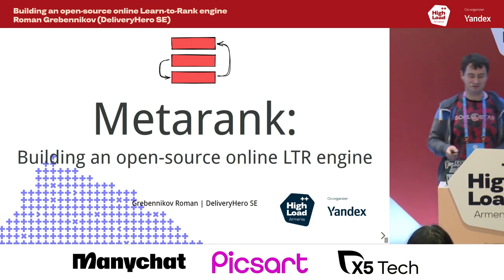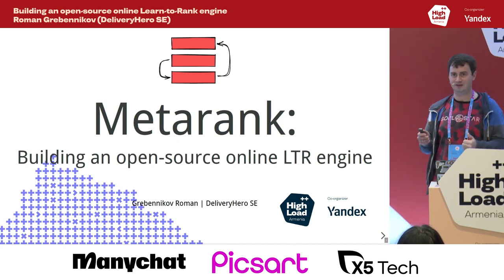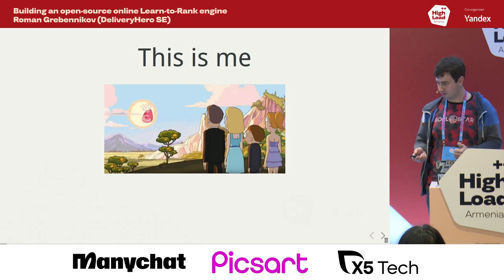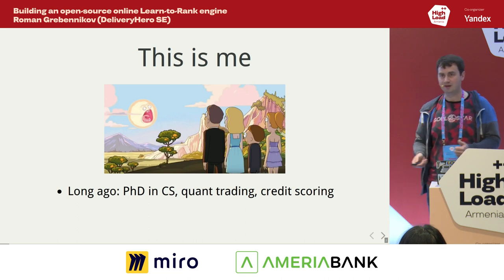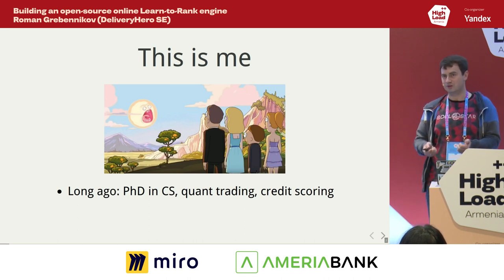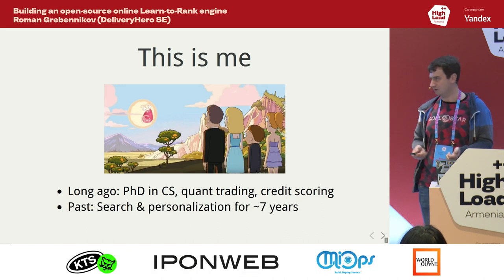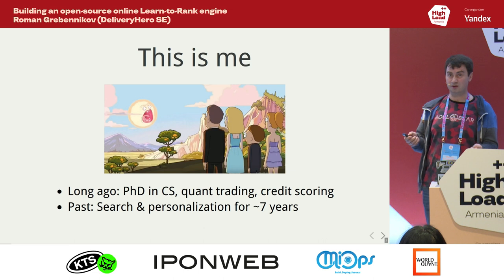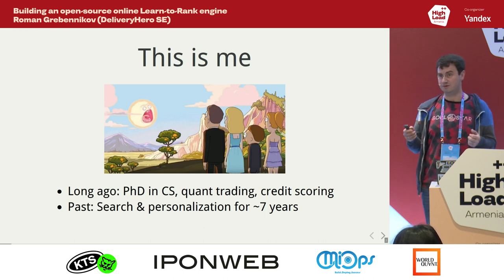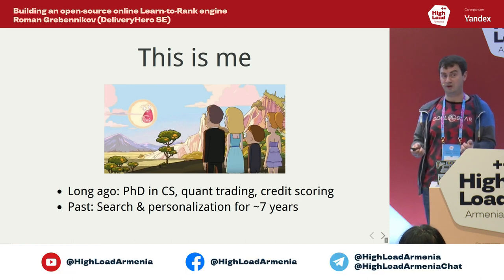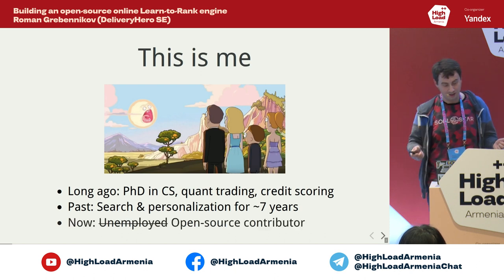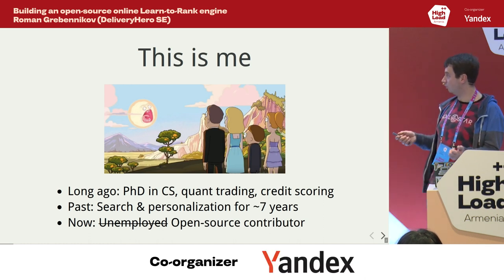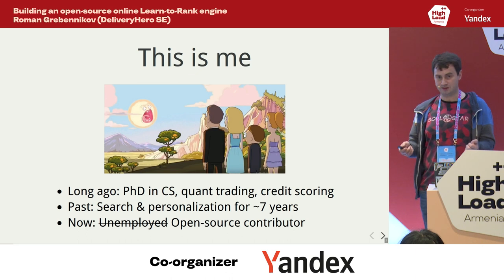Hello, my name is Roman Grubenikov and today we're going to talk about ranking. Coming originally from academia, I worked for quite some time in different areas of machine learning like quant rating, credit scoring, and for the last couple of years it's e-commerce, search, personalization, ranking and all that stuff. I'm currently maintaining an open source project called MetaRank, which is actually about ranking.